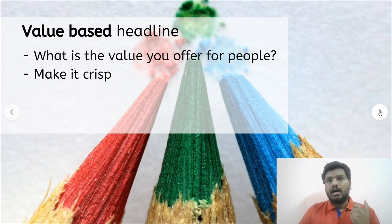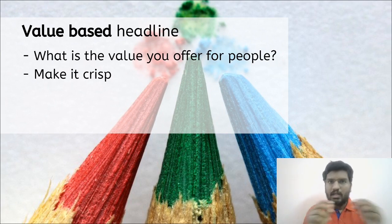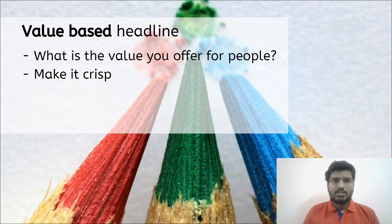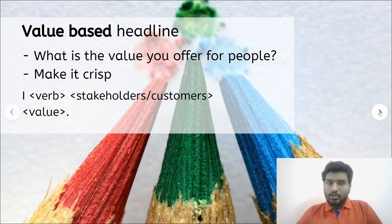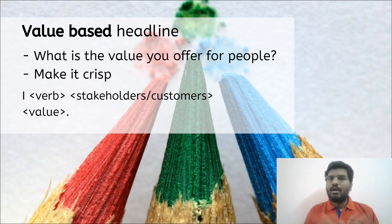The second type of writing a headline is value-based, and this is one of the most effective ways when it comes to marketing. You communicate what value you are offering for people as part of the headline. Write it down in a couple of sentences and make them crisp — LinkedIn allows you to only add up to 100 characters in your headline, so it has to be easily understandable. One format to follow is: 'I' followed by a verb, followed by a stakeholder or customer — your target audience — and then what is the value you are offering.